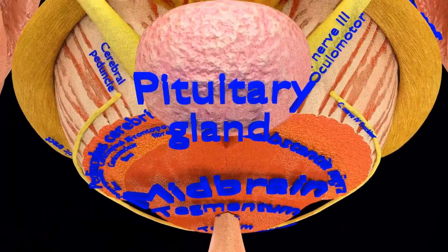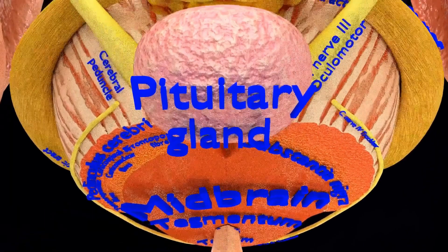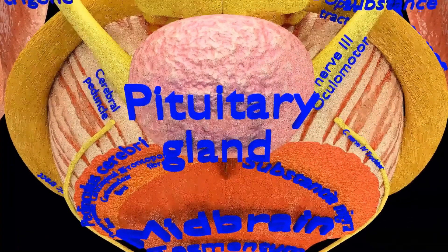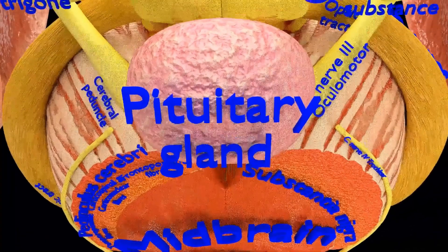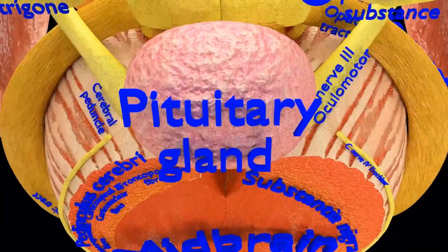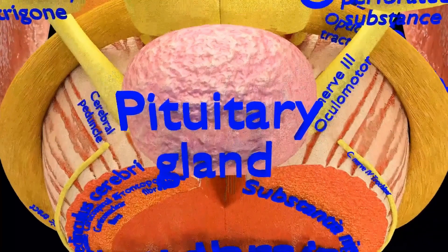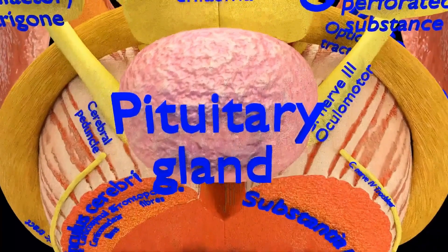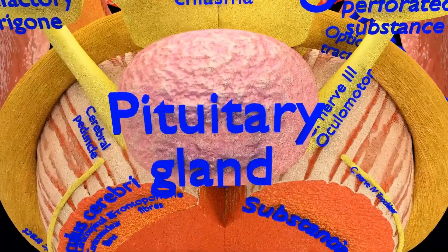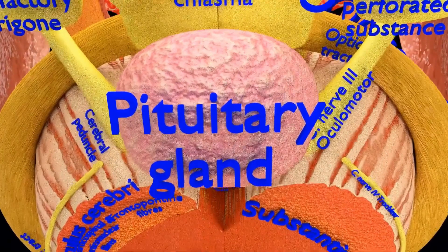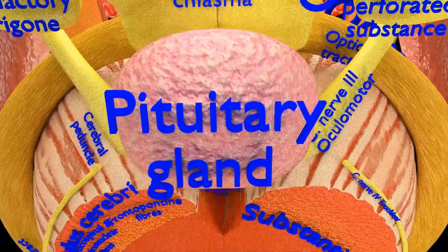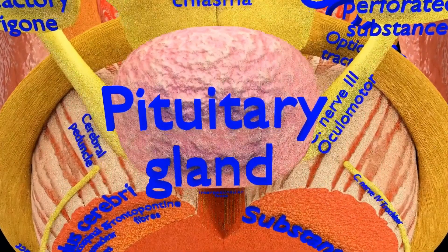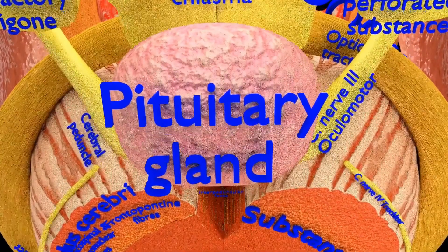The pituitary gland is supported within the sella turcica of the sphenoid bone within the skull. It is composed of three lobes: anterior, intermediate, and posterior.